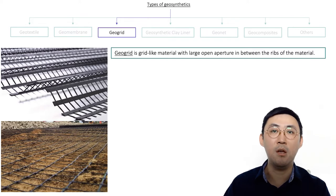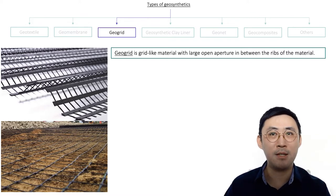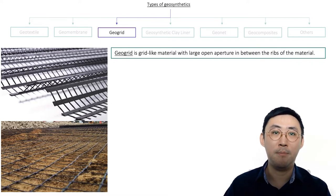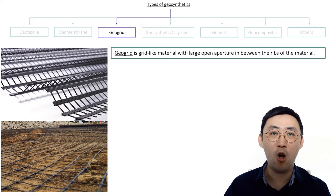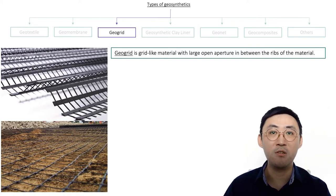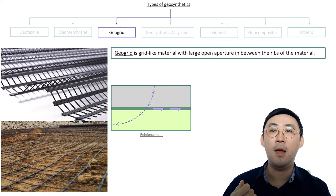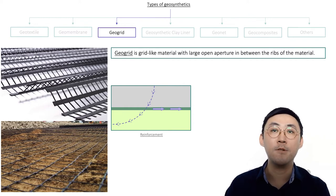The third type of geosynthetics is geogrid. This group of materials is a grid-like material with large open apertures between the ribs. Geogrid can be produced by extrusion — drawn and pulled to improve its strength — or knitted and weaved to form a geogrid-like structure, or the individual ribs can be welded at junctions. It is used mainly as a reinforcement material for roads, walls, slopes, and embankments to strengthen the structure of a project. Geogrid serves one important function: reinforcement.